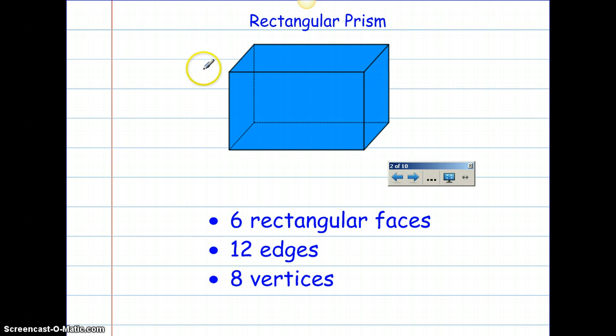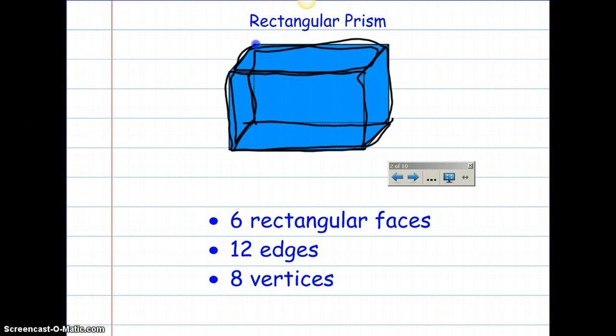The rectangular prism has six rectangular faces. And some of them are very hard to see. Here's one, there's two, three, four, five at the top, and this makes six. So you can see those rectangular faces.